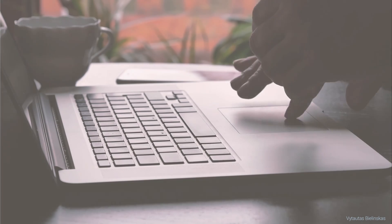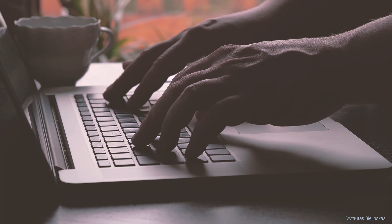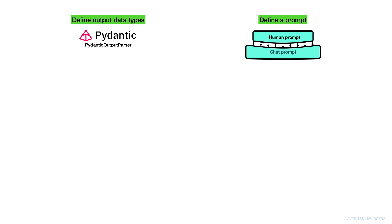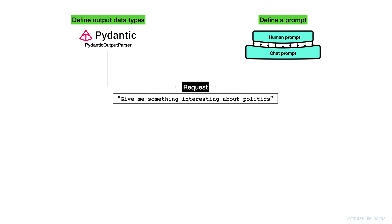Let's check the steps we are going to do in this tutorial. In our action plan, the very first step is to define output data types. For this purpose, we will prepare an OOP class and use the Pydantic output parser inside. Then we need to think about our prompt — we simply write a human prompt and then directly incorporate this into the chat prompt. The next component is the request, the main message we will send to our LLM model.